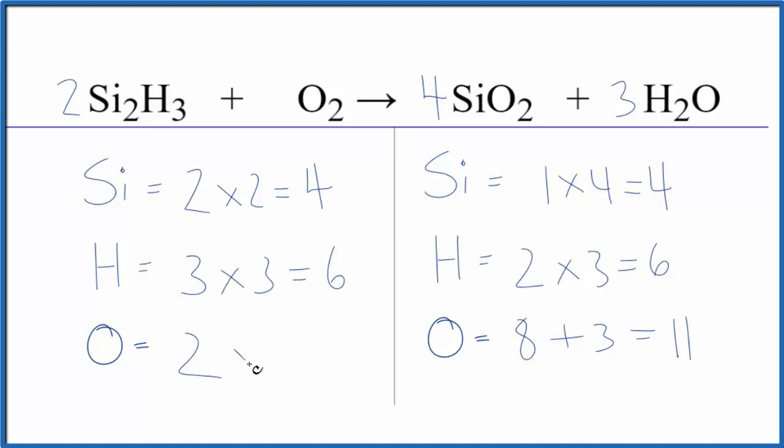We know that 2 times some number is going to equal 11, and then that would balance the equation. 2 times 11 over 2, when we multiply this, the 2's, they cancel out, we end up with 11. So if we put 11 over 2 as our coefficient, this equation would be balanced. The ratios would be correct.